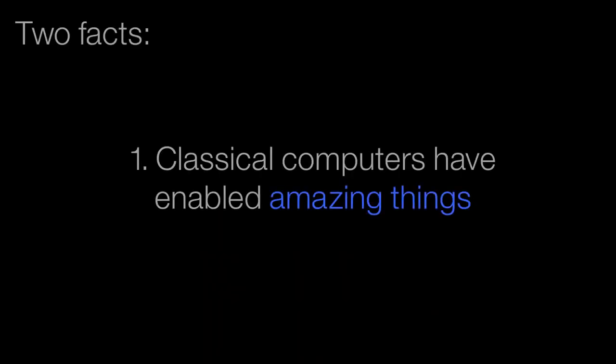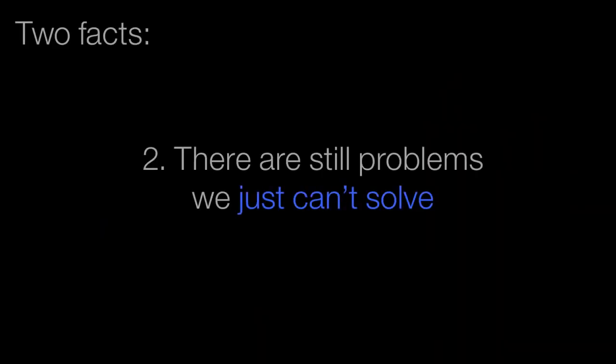I want to start with two facts. Fact number one: classical computers have enabled amazing things — the internet, air travel, the electronic giraffe outside blaring music. Classical computers have enabled just amazing things, but one of the things we don't often talk about is all the things they can't do. There are so many things they can't. I want to start with two examples of things classical computers are really bad at. Maybe they can solve small versions of these problems, but by the time the problem gets big enough to be interesting, we just run out of computing horsepower.